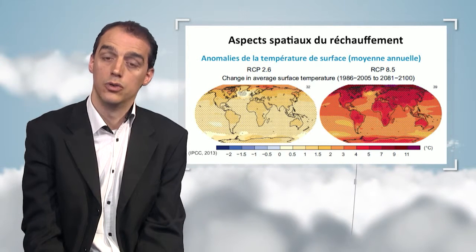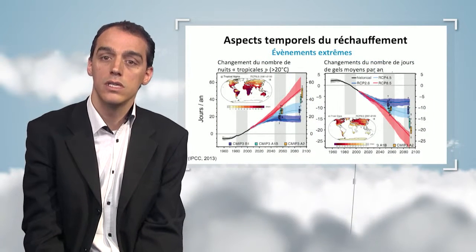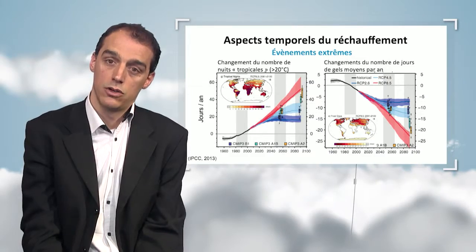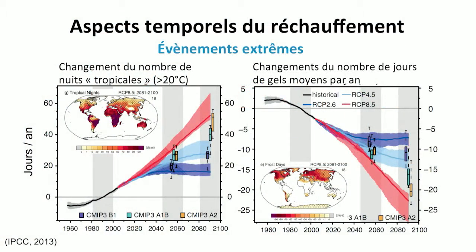Beyond the global and regional aspects, climate models also allow us to look at extreme changes in temperature. On the right-hand side, you have the number of tropical nights — nights during which the average temperature exceeds 20 degrees, as occurs in tropical countries. The climatic model shows that the number of tropical nights per year will increase more dramatically in some scenarios. In the RCP 8.5 scenario, the number of tropical nights on average for the whole globe would increase by 50 to 60 days per year by the end of the 21st century. There is also another extreme event shown: the number of freezing days per year, and you can see its evolution depending on the type of scenario used.